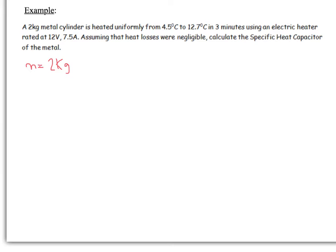So first of all, let's calculate the amount of energy delivered to the metal container. From GCSE you should know energy is power times time. Remember, power is the potential difference multiplied by the current. So we've got 12 times 7.5 times 3 times 60 because we need the SI unit of time, which gives us 1.62 times 10 to the 4 joules.